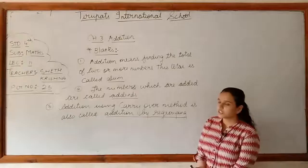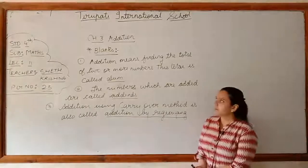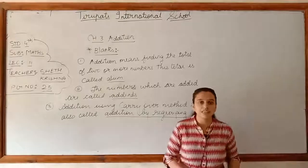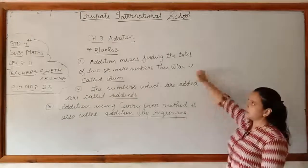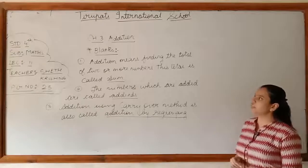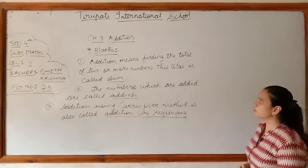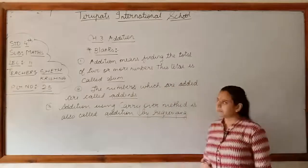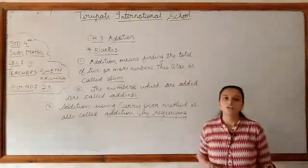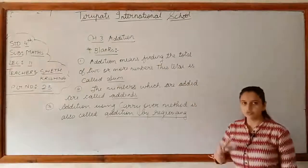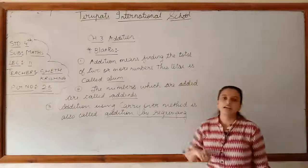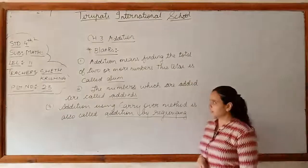Addition you have already studied in third standard, but here in addition we will now add numbers up to thousand, ten thousand, and lakh digits. Addition means finding the total of two or more numbers. This total is called the sum.